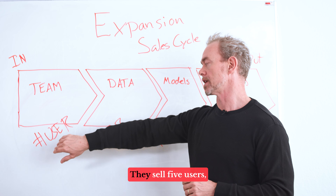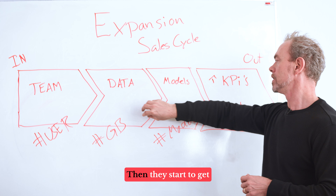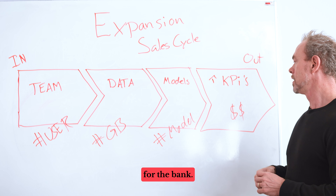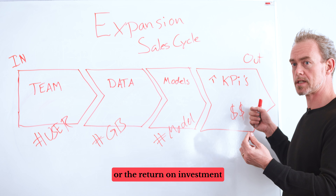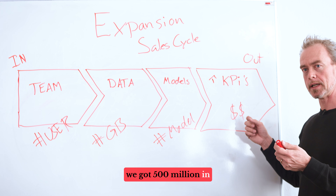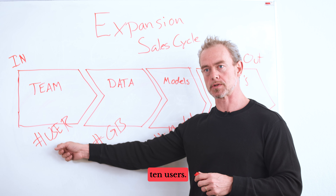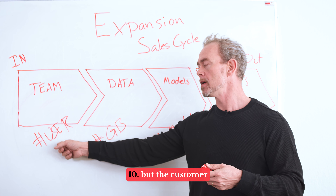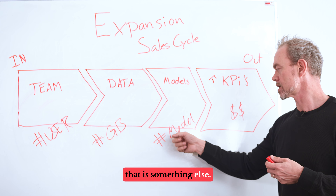Then comes the expansion sale. They sell five users. The five users start to use the platform, connect all the data sources, create tables, get ideas for models, train the models, deploy the models, and the models generate money for the bank. Now they have an overview of the ROI — they bought five users for 50,000 and got 500 million out in the end. Fantastic return. Let's buy five more. So now they buy 10 users. We had an expansion sale — they went from five to 10 — but the customer had to go through the entire value chain first.